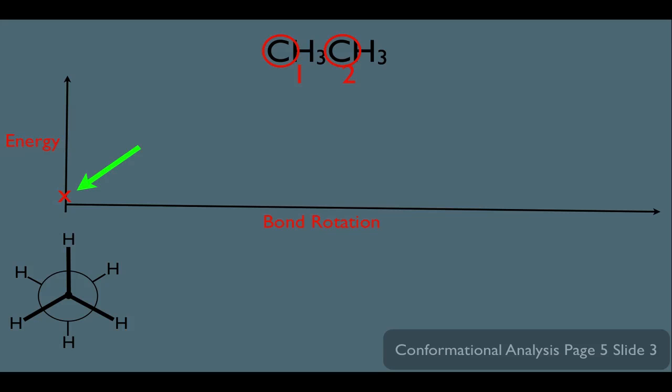The energy is low for two reasons. One, it's not an eclipsing structure — it's staggered. And two, there are no gauche interactions. Remember, the term gauche is only applied when there are two non-hydrogens that are 60 degrees apart. You could technically say this molecule has gauche interactions between two hydrogens, but that's not worth a lot of energy. The hydrogens are very small, so there's not really any steric strain when two hydrogens happen to be gauche to each other. So this will be the point on the graph for our first structure.